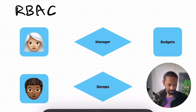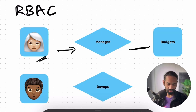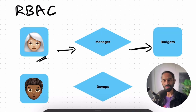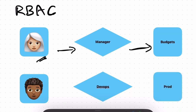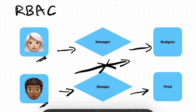Here's an example. Let's say Kim is a manager at a company. As a manager, she can view reports and budgets and approve them, but she cannot edit user accounts. So when Kim logs in, the system checks her role as a manager and grants her those permissions. Similarly, Raj is a DevOps person and he has access to the production server, but not to budgets because he's not tagged to a role that does so.